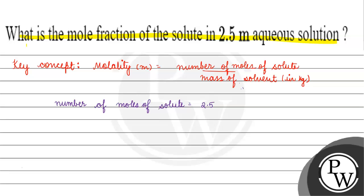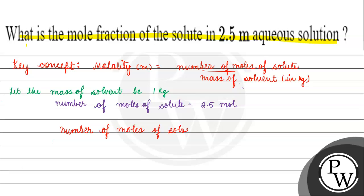So let the mass of solvent be 1 kg. If we talk about the number of moles of solvent, we calculate it as 1000 g divided by the molar mass of water, which is 18 g per mole. This gives us 55.55 moles.